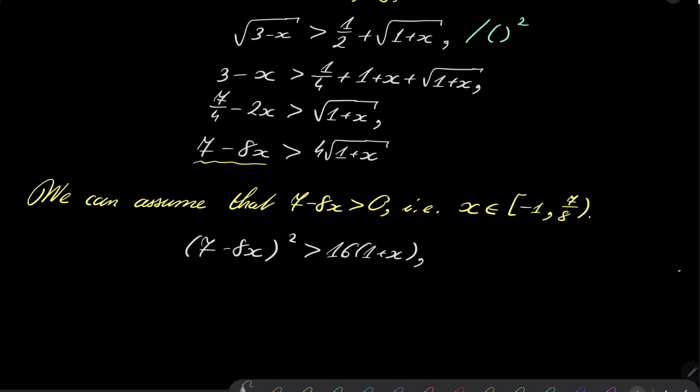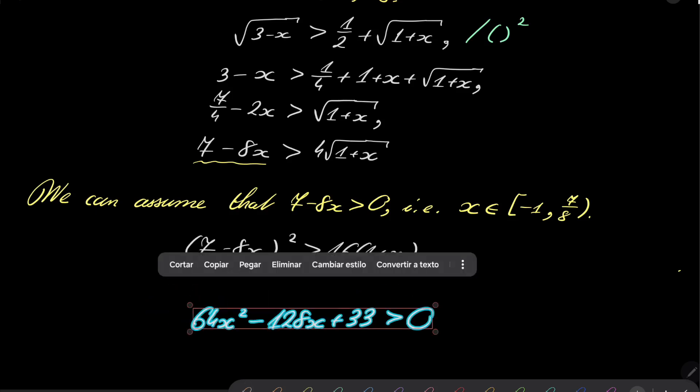after putting everything on one side, we will have 64 x squared minus 128 times x plus 33 greater than 0. So,